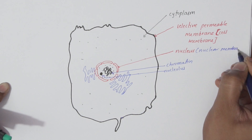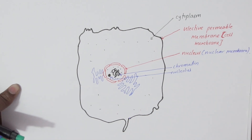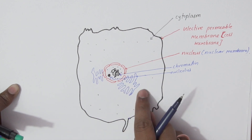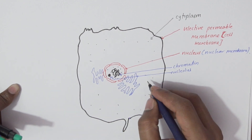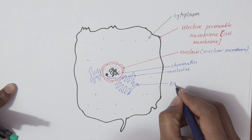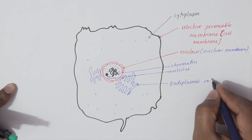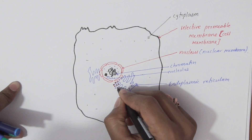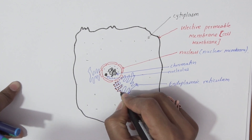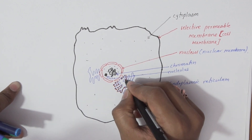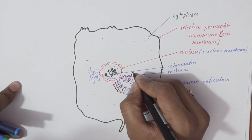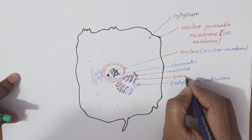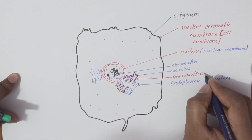We will discuss these in detail in upcoming videos. You can also see a well-organized tubular network following the nuclear outer membrane, called the endoplasmic reticulum. Certain parts of the endoplasmic reticulum are covered by granular-shaped structures and appear rough, hence it is called the rough endoplasmic reticulum or granular endoplasmic reticulum.